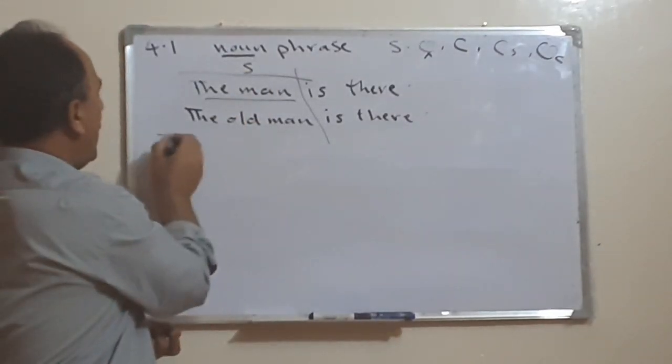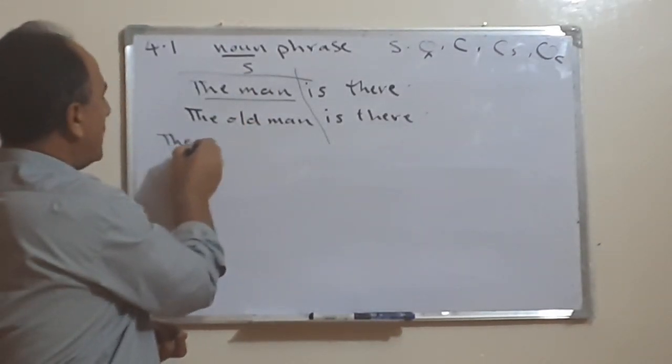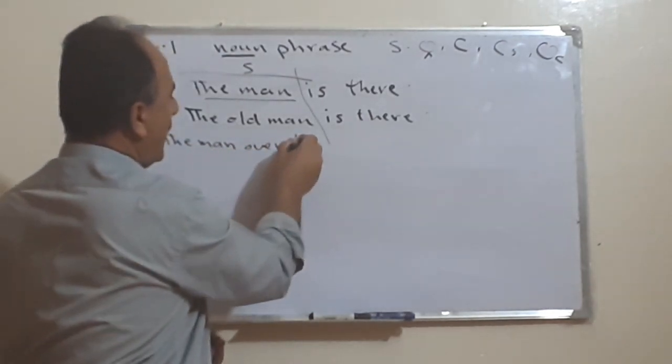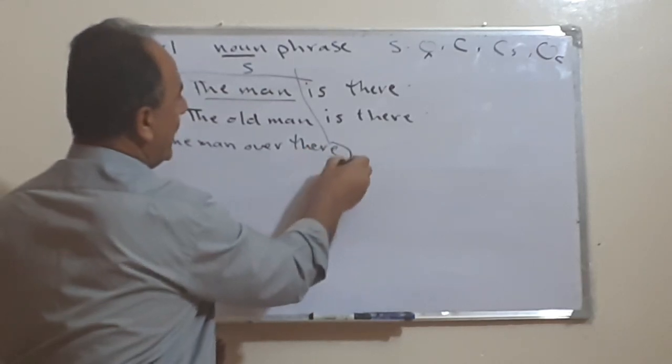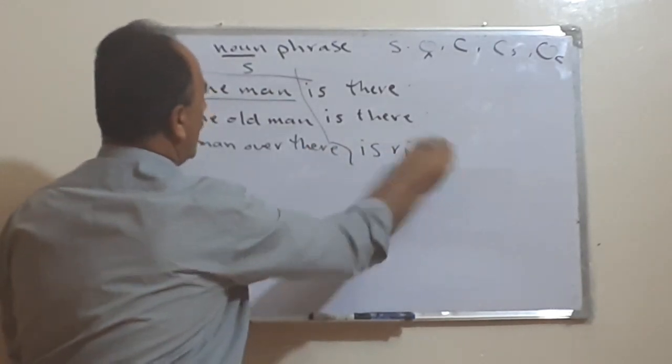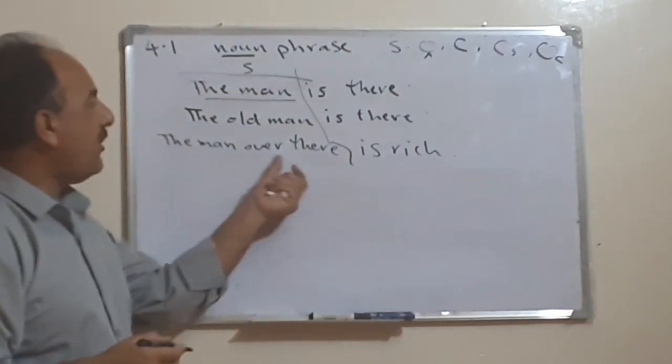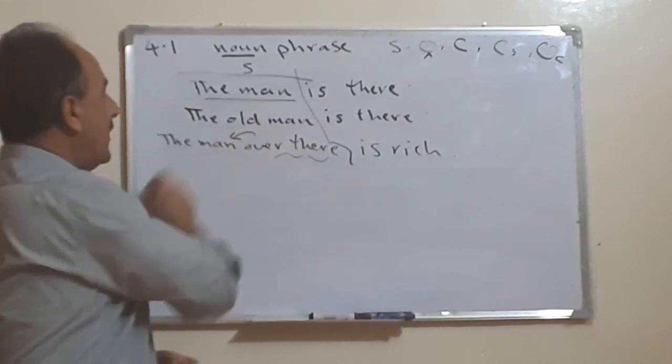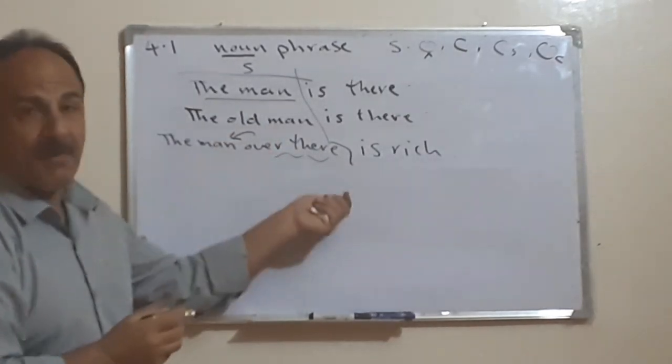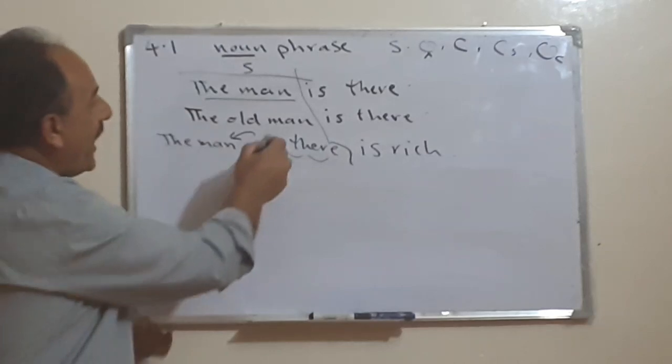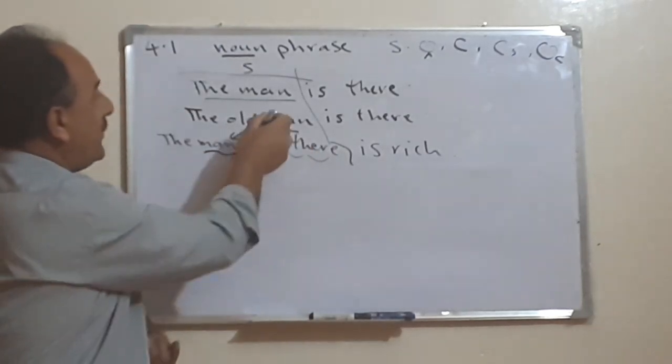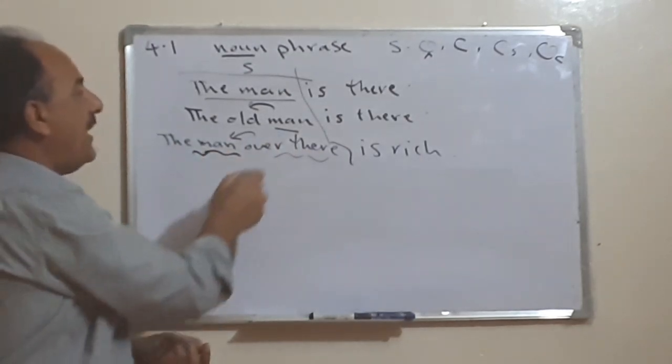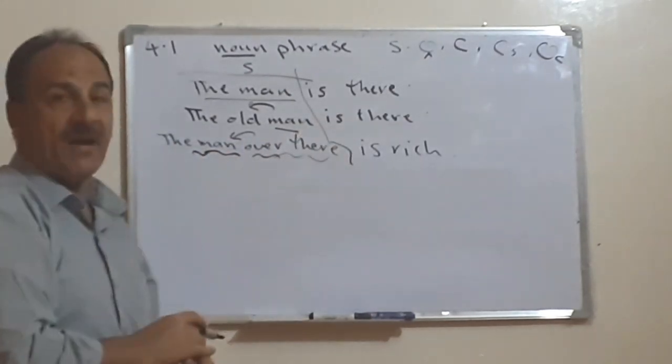Or we say, for example, the man over there is rich. See, what do we have? The man over there is rich. Now we modified the noun with words that come after. So it is possible to modify the noun with elements before or to modify the noun, here the man, with elements that come after.